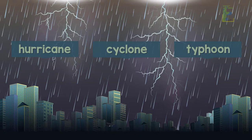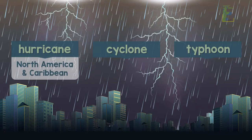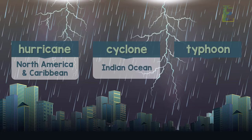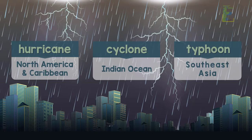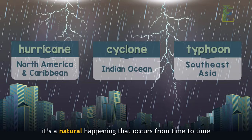Hurricane is a tropical cyclone that originates in North America and the Caribbean. In the Indian Ocean they are called cyclones and in Southeast Asia they are called typhoons. These typhoons simply exist because it's a natural happening that occurs from time to time.